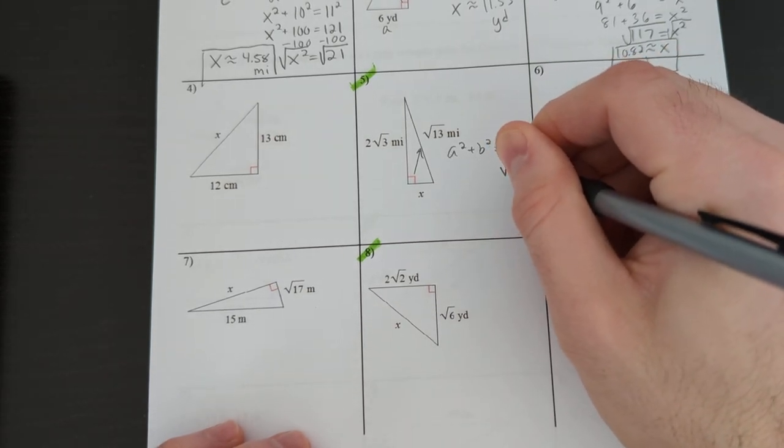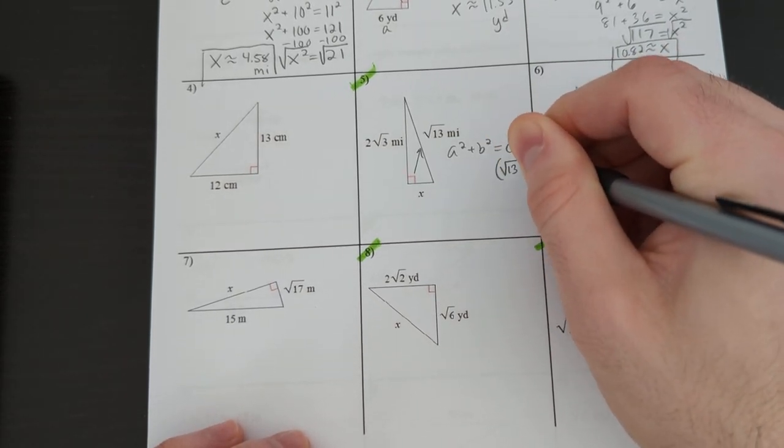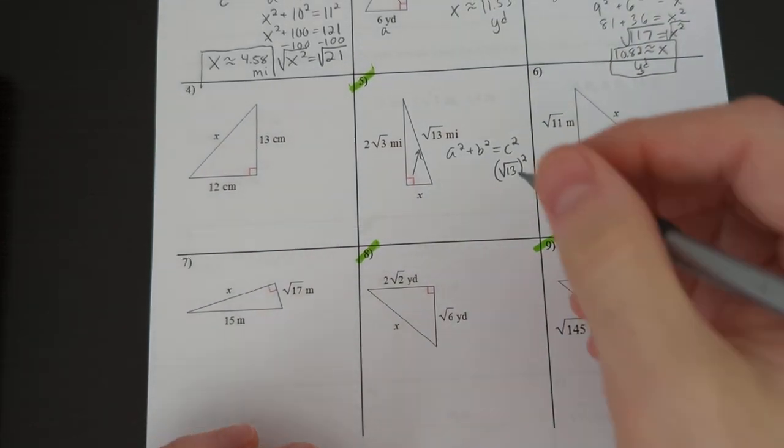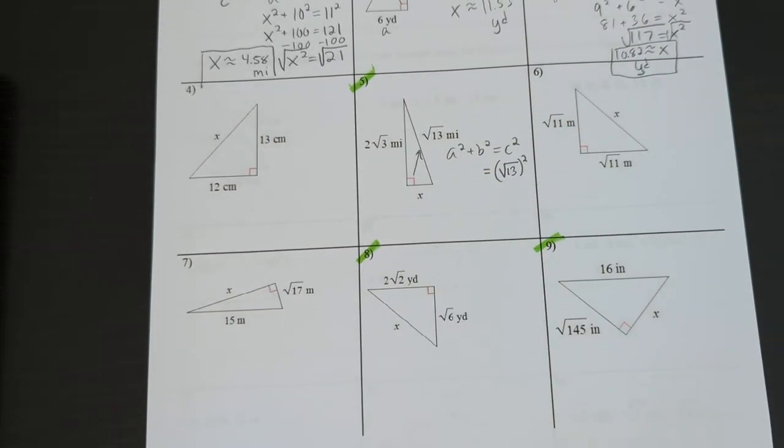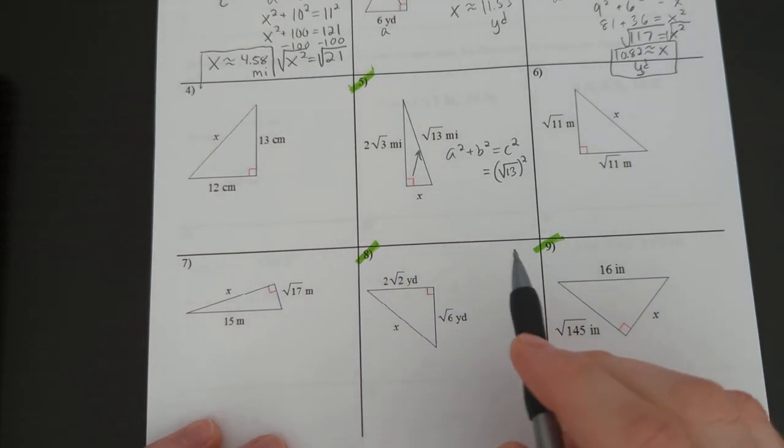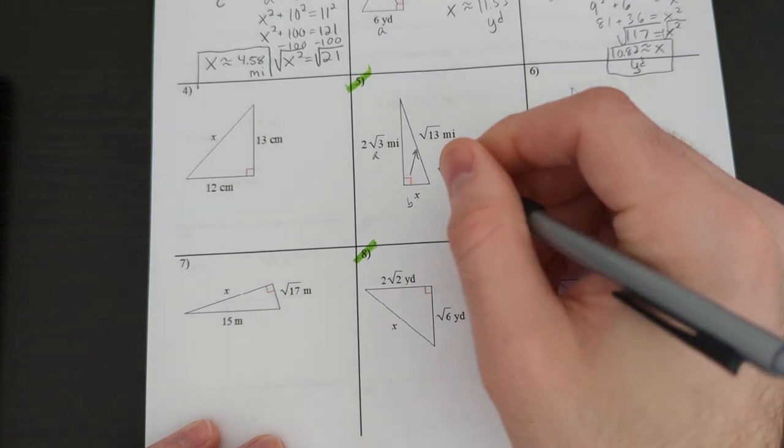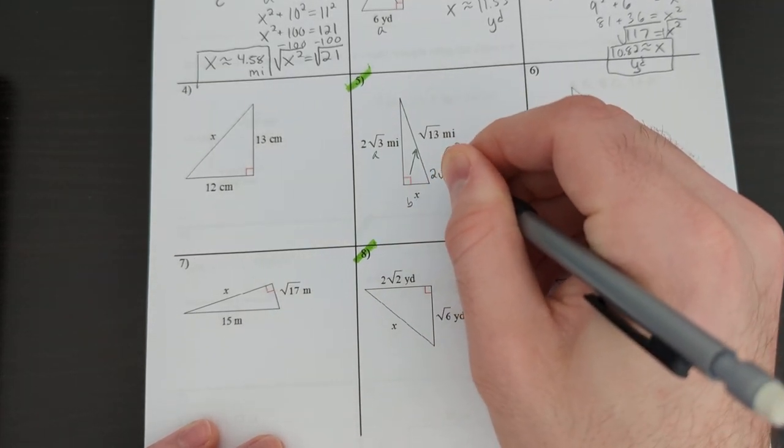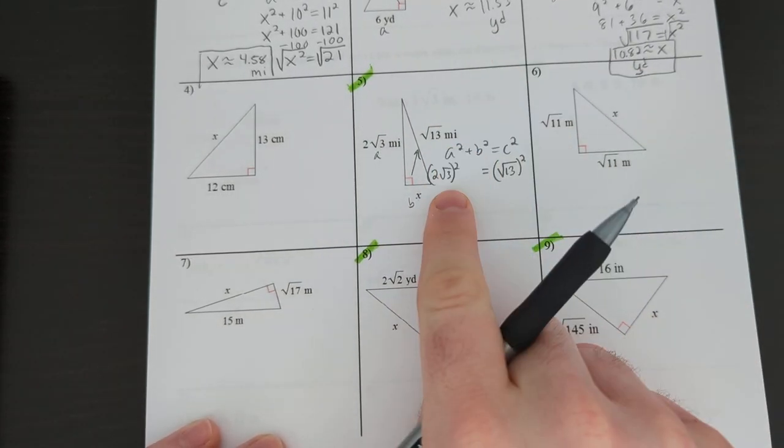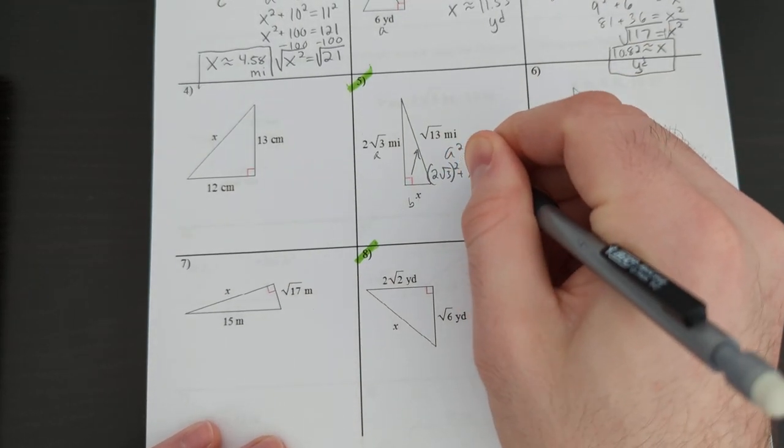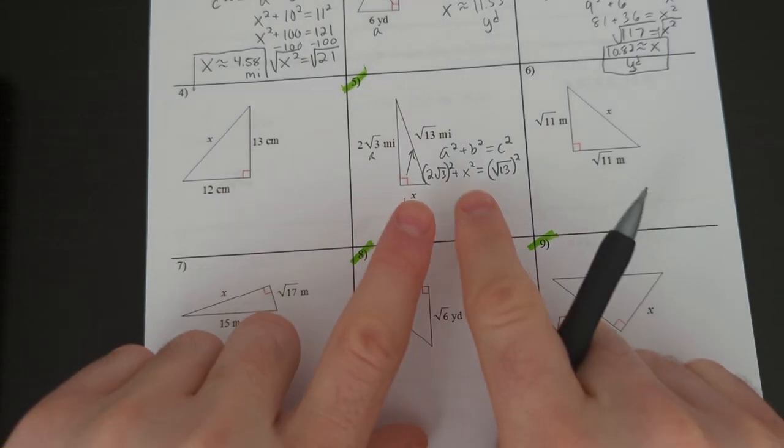Now, when you write this in your formula or in your equation, make sure you put parentheses around that number. It becomes very important when you type it into the calculator. This is a, that's b. Again, that doesn't matter. 2 root 3, all of that is in parentheses. That's very important you do that. And then x squared here.